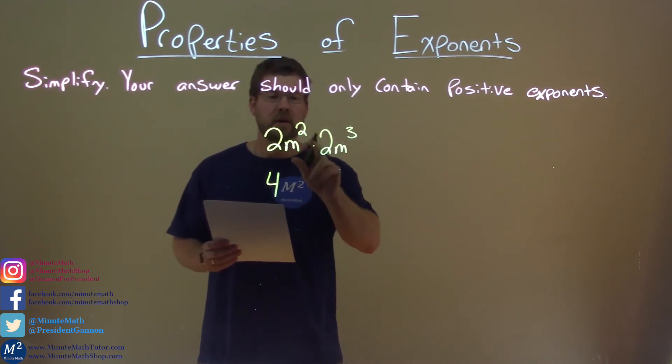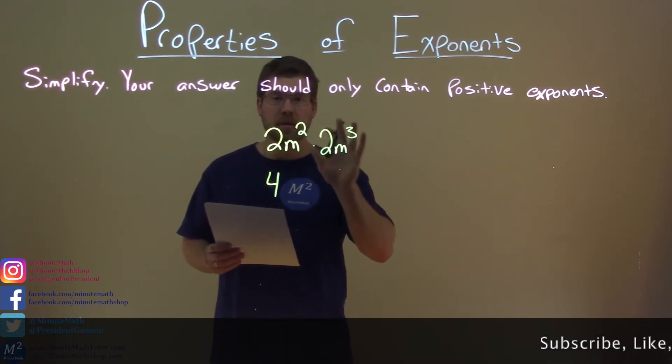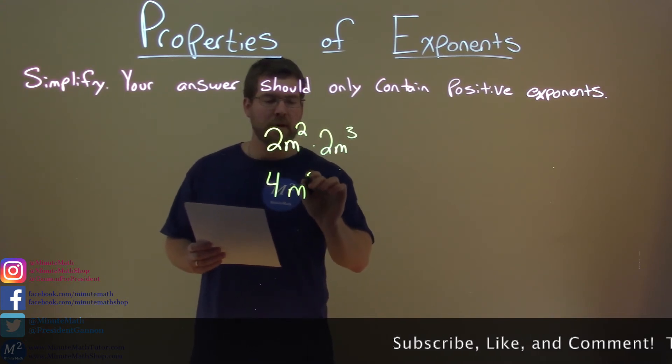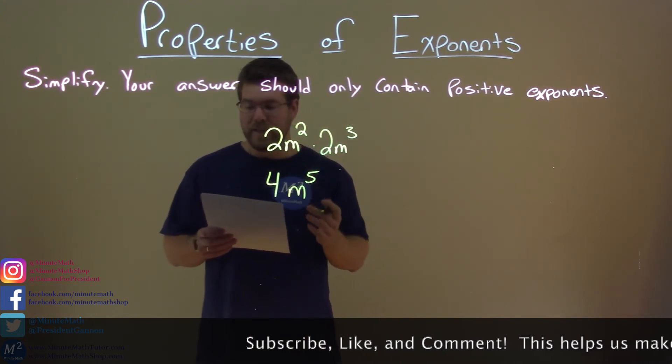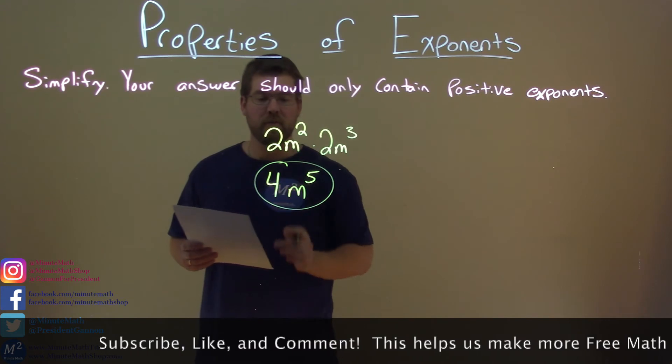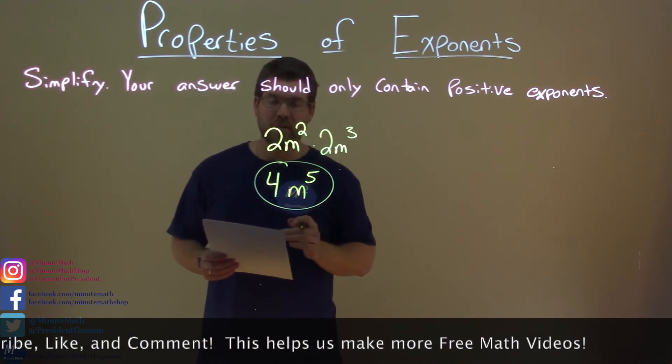So, in this case, 2 plus 3 is 5. So, we have m to the fifth power, and that is our final answer: 4m to the fifth power.